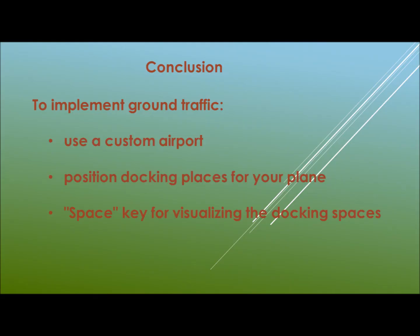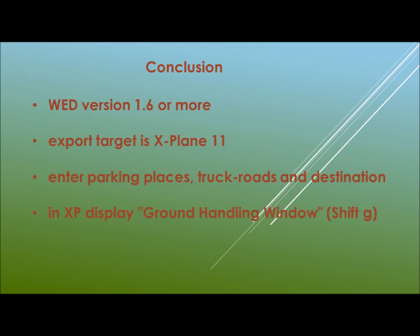To summarize how to implement ground traffic in an airport: use a custom airport; position docking places for your plane in Planemaker using the space key for visualizing the docking spaces; use World Editor version 1.6 or more; the export target is to be X-Plane 11; enter parking spots, truck roads, and destinations in World Editor; and in X-Plane, call the service display ground handling window with SHIFT-J.